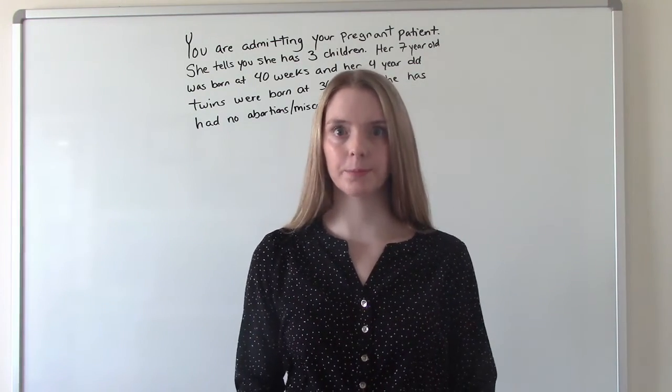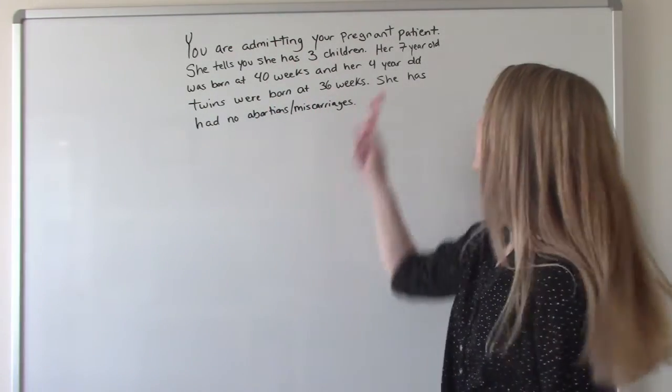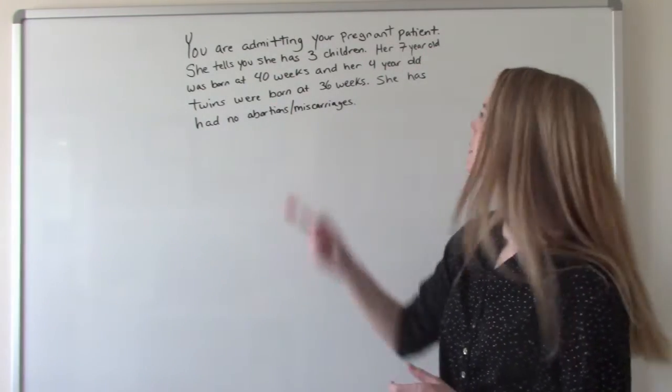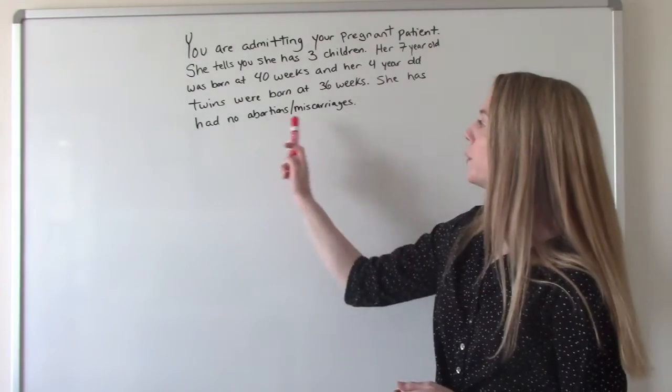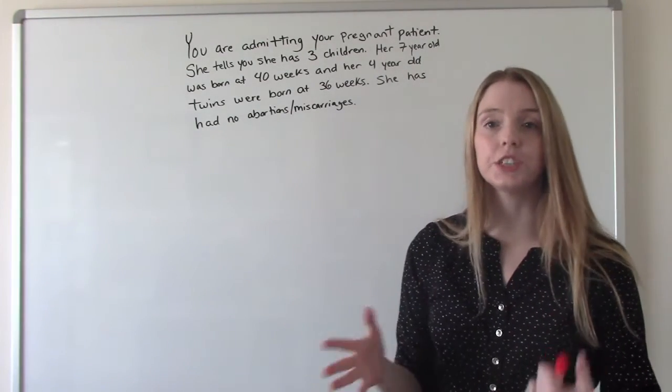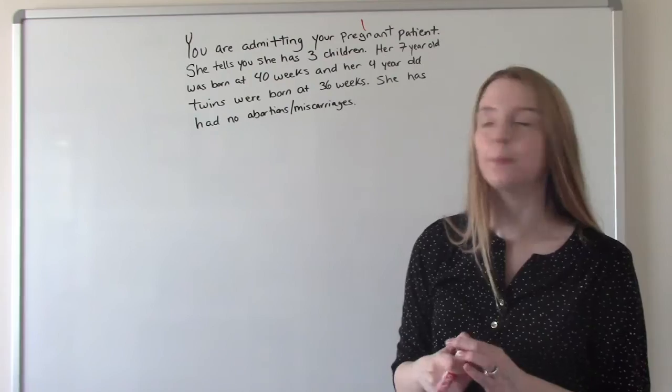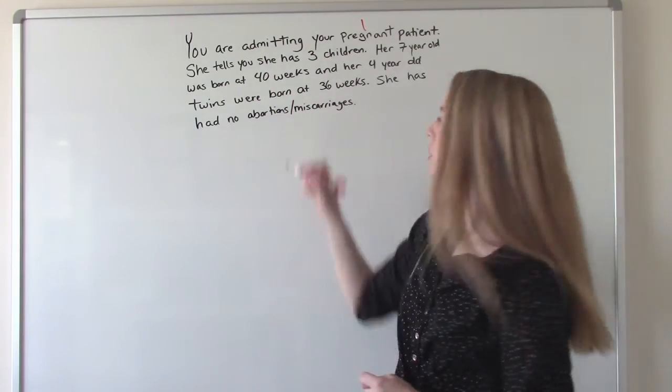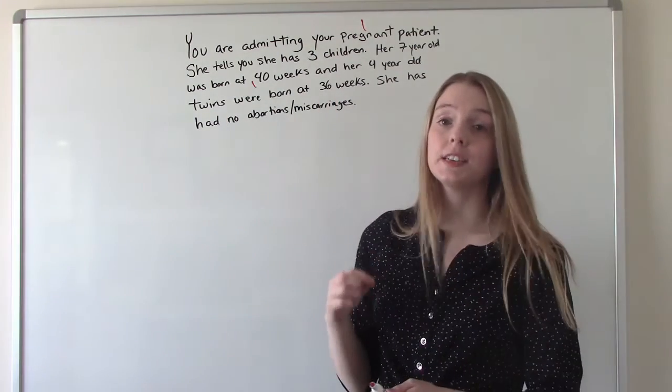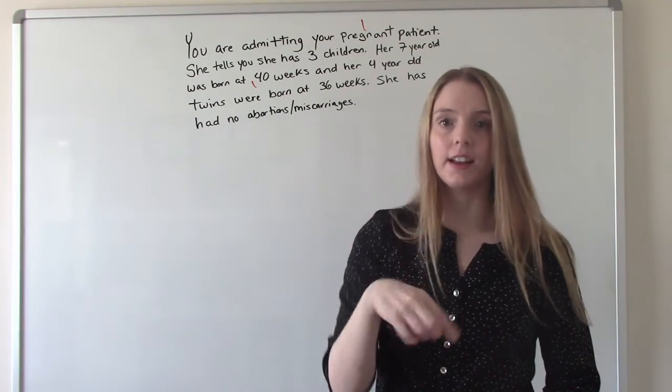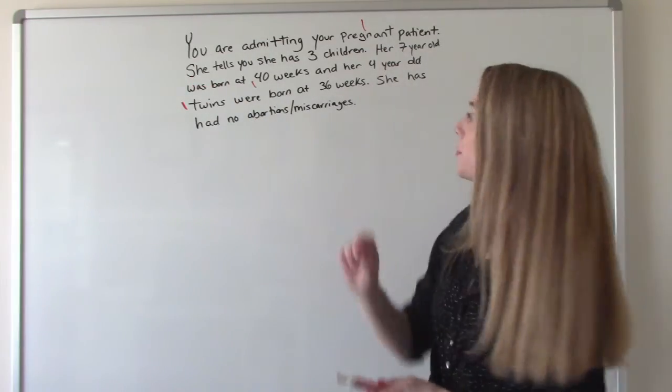Okay, now let's do an example with multiples. So we're admitting our pregnant patient. She tells us that she has three kids. Her seven-year-old was born at 40 weeks and her four-year-old twins were born at 36 weeks. She has had no abortions or miscarriages. What is her GTPAL? So she's pregnant. That's one for our G column. She's got the 40-week seven-year-old. That's one. And then she has these twins. Now remember, G, T, P, and A, it counts as one. It doesn't matter if there's eight babies in there. So she gets a one for the twins. So add that up. Our G is three.